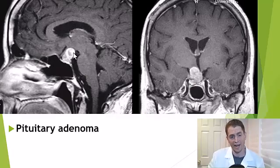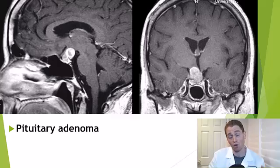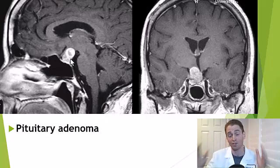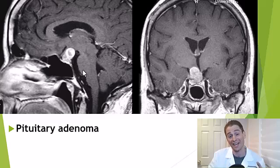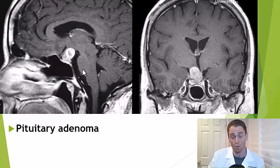Here is a pituitary adenoma, a usually benign tumor of the pituitary gland. However, if large, it can compress the optic chiasm causing peripheral vision loss, and in some cases it can secrete hormones such as prolactin causing inappropriate milk secretion, or growth hormone causing gigantism, but in some cases they could be non-functioning — in other words, they don't secrete hormone.